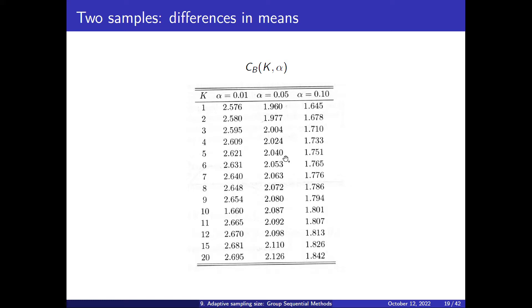If you go to the original paper, you will see how this is calculated. An important thing is that it is a number that goes more or less around 2 for a threshold of 0.05 — that very typical threshold. For 1%, it is around 2.5 or a little bit larger.